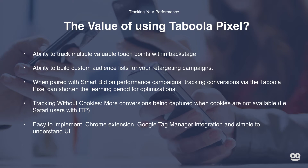In addition to this, there are a few other benefits. Custom audiences: the ability to build a custom audience list for your retargeting campaigns. Smart bid: when launching performance campaigns, tracking conversions with the Taboola Pixel can shorten the learning period for optimizations. Tracking without cookies: more conversions can be captured when cookies are not available.